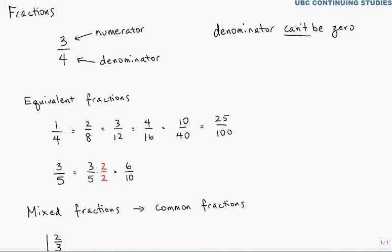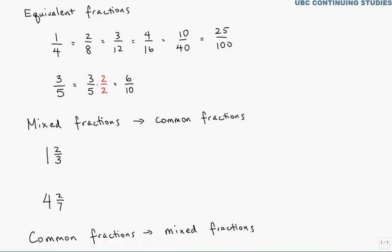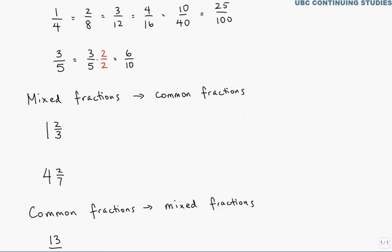Now, there's another issue that comes up, and that is mixed fractions and common fractions. Common fractions are fractions where you simply have a numerator and a denominator. A mixed fraction, you have a whole number followed by a fraction. So, one and two-thirds, four and two-sevenths. These are mixed fractions. And what they are missing, but really mean, is one plus two-thirds. They're missing that plus sign.